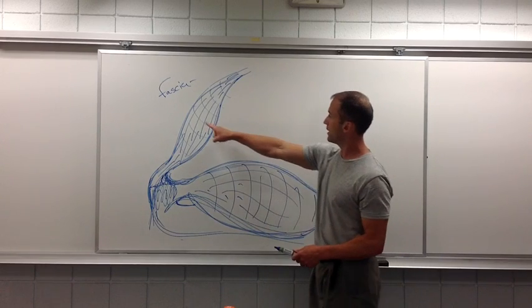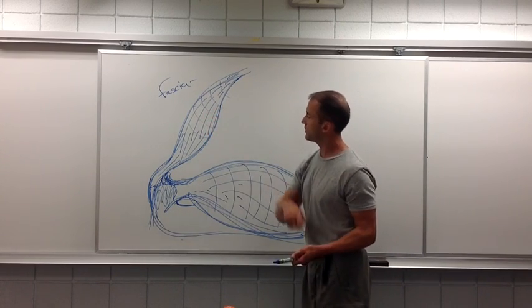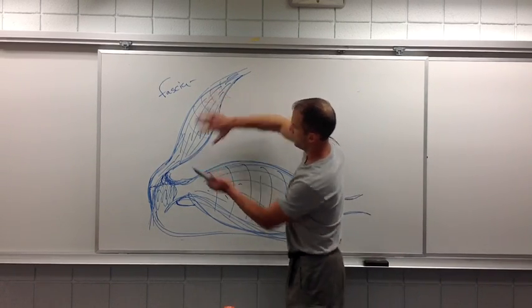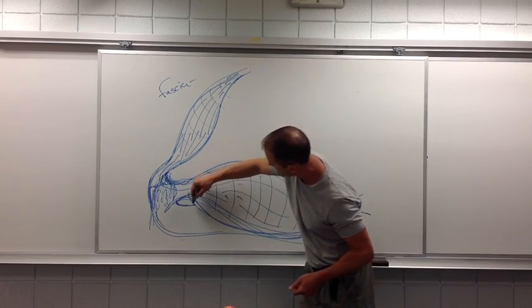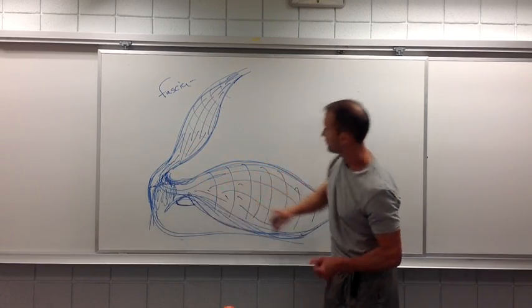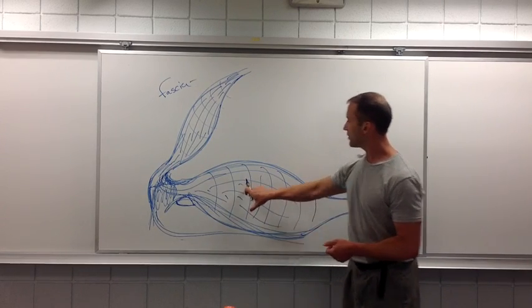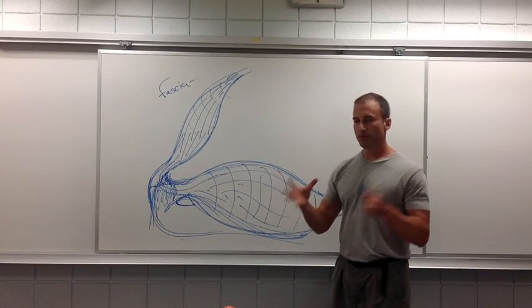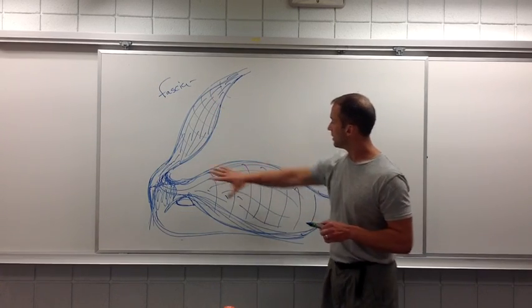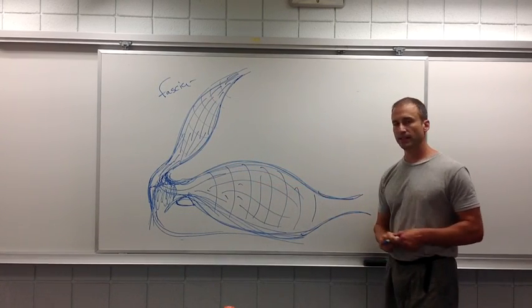But even when you try to contract just this muscle, this contraction is going to create a tension on the connective tissue that runs all the way down here. So this muscle might not seem to contract like this muscle does, but there will be an integration between the two along the line of connective tissue.